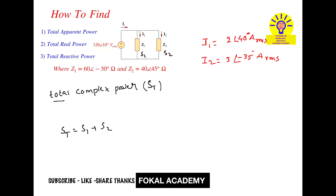S1 equals the standard formula: V_rms squared divided by Z1 conjugate. S2 equals V_rms squared divided by Z2 conjugate. To apply the conjugate, recall that for a complex number in phasor form — amplitude A at angle theta — its complex conjugate has the same amplitude but the angle becomes negative: A at angle minus theta.